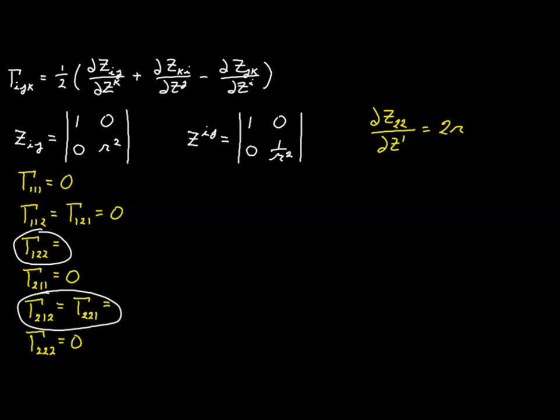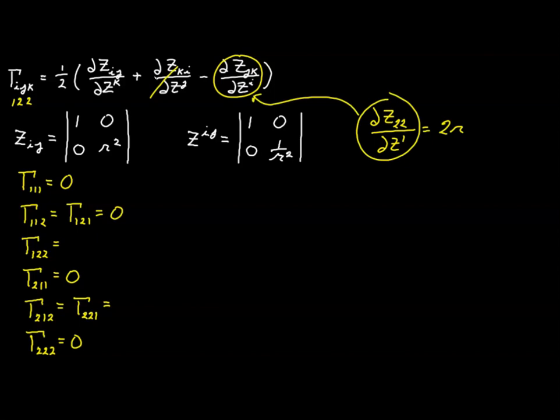We only need to use our formula twice: once for Γ₁₂₂ and once for Γ₂₁₂. For Γ₁₂₂, i is 1, so the first term equals 2r and the other two terms drop out. With the negative sign and a factor of one half, the result is simply negative r.